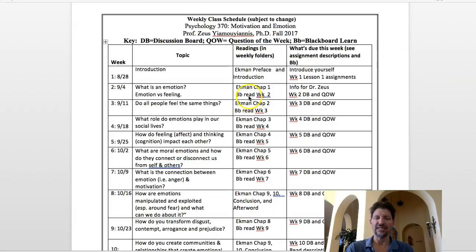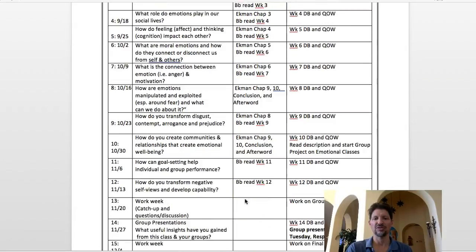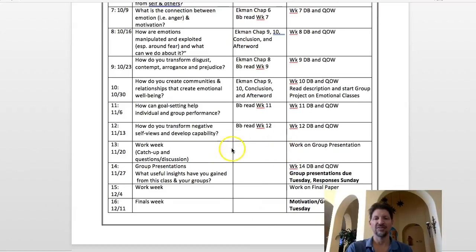You'll have readings each week in the Blackboard week two, week three, and week four folders. We have our textbook — more of a popular book called Emotions Revealed by Paul Ekman. You've got that with the preface, introduction, and Ekman chapter one. As we go further down, getting into the projects, I begin to skip the readings and it's all applied. You're working on the group presentation and your final paper, and I give you actual weeks to work on this.